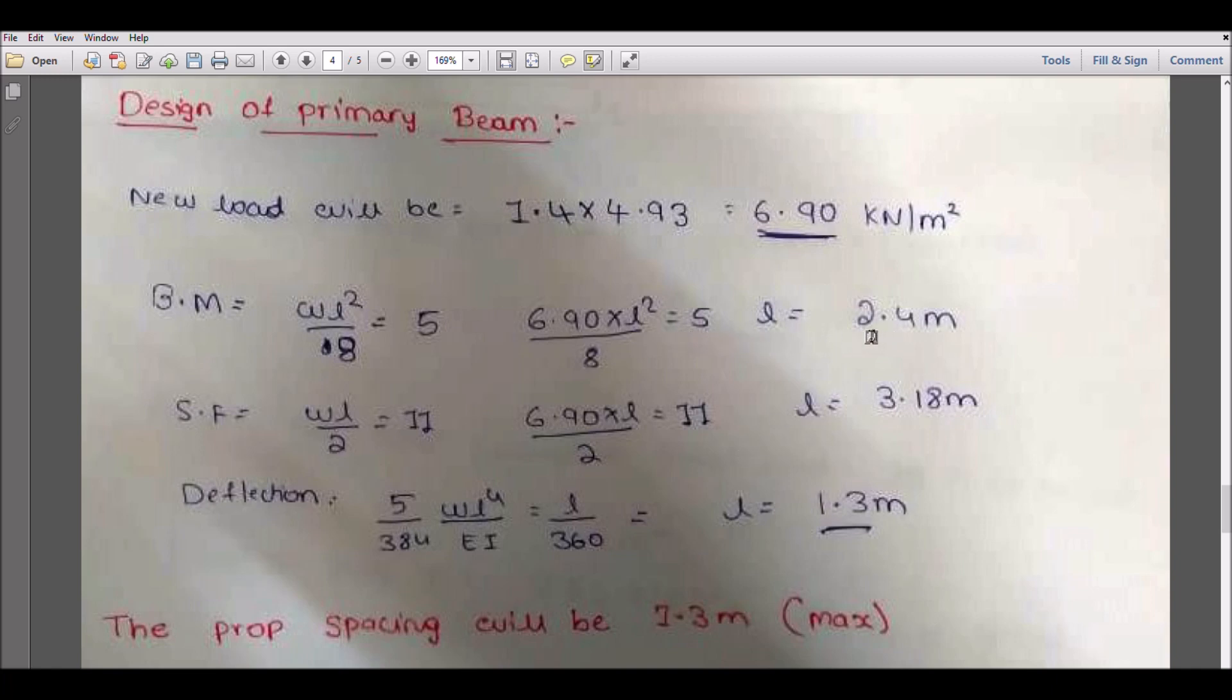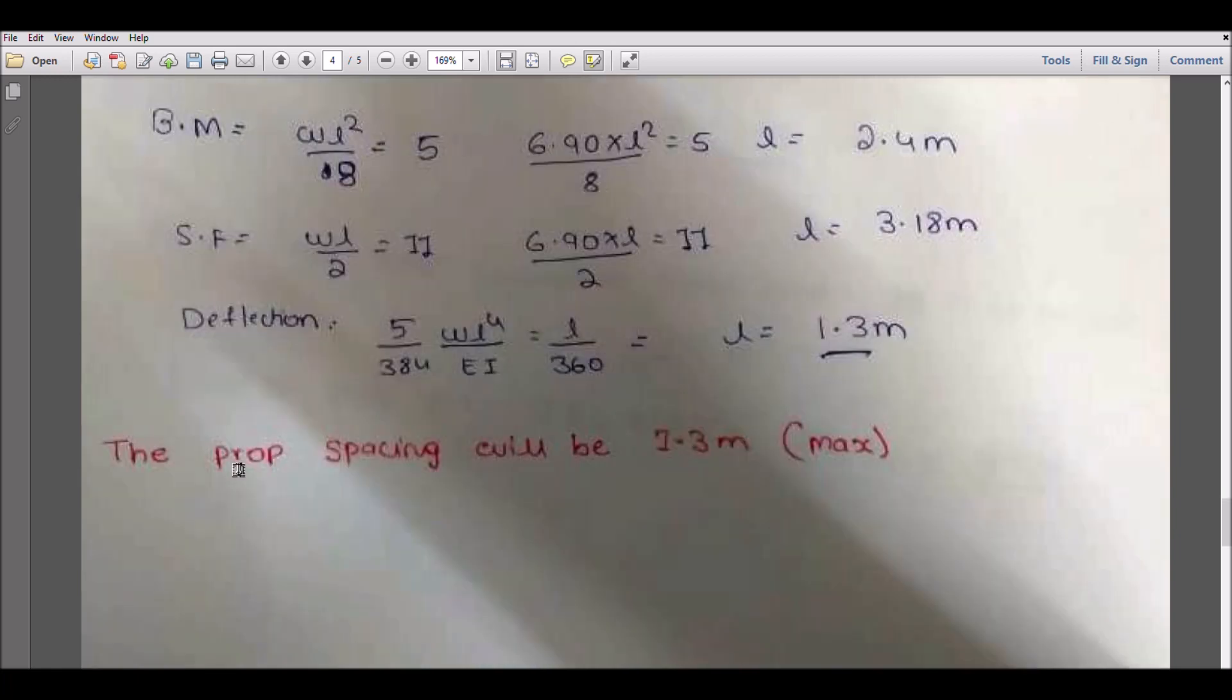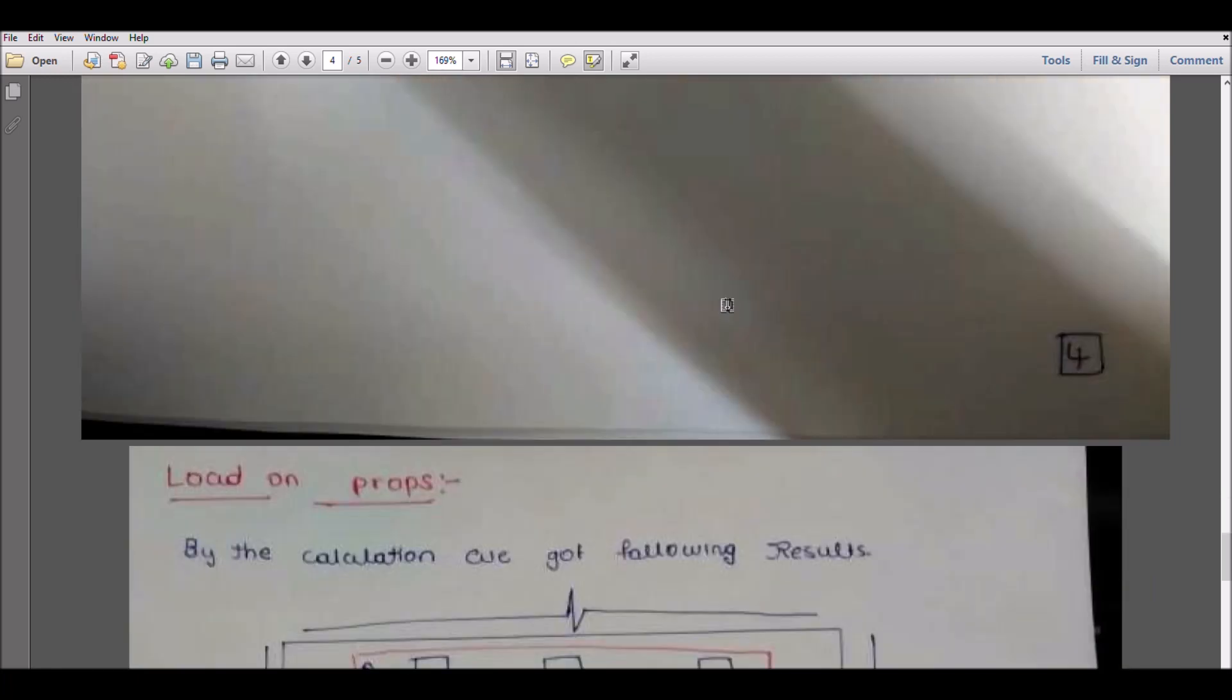I will get the L value. So first case is 2.4, second case is 3.18, but in third case it is 1.3. Better to take 1.3, so the prop spacing will be 1.3 maximum for this condition.